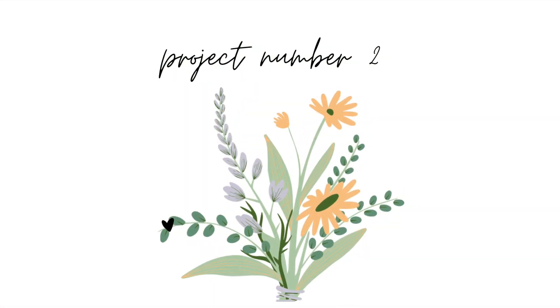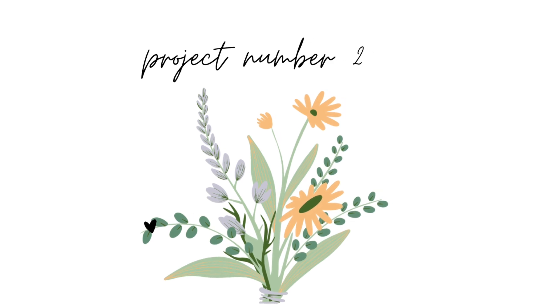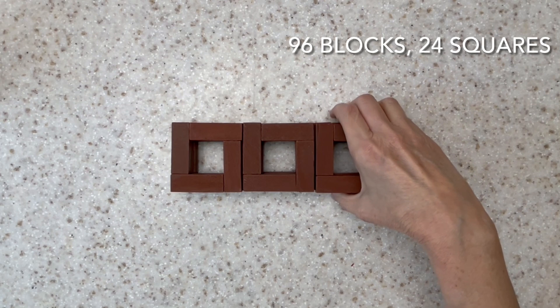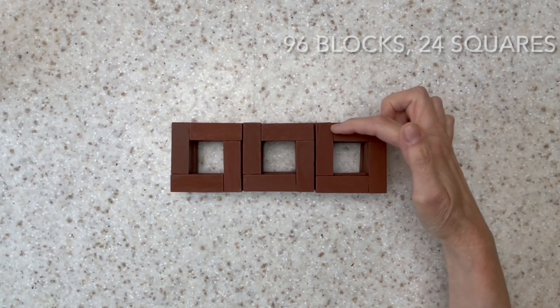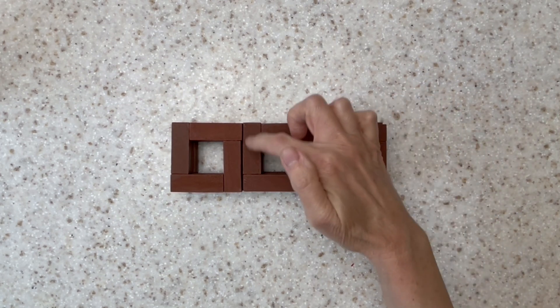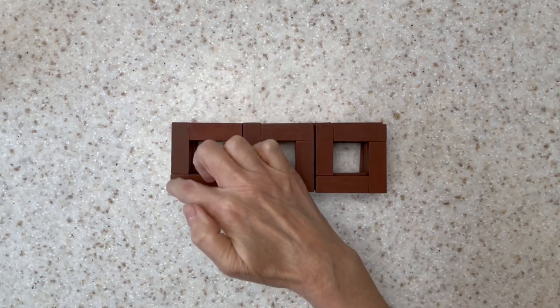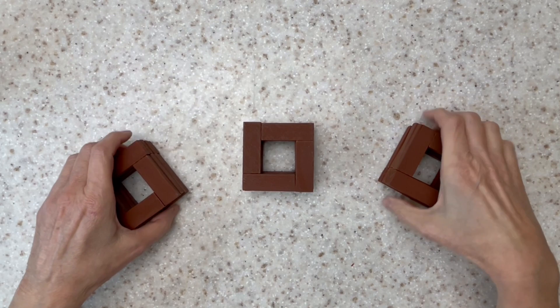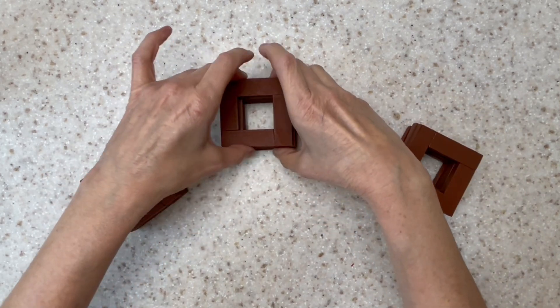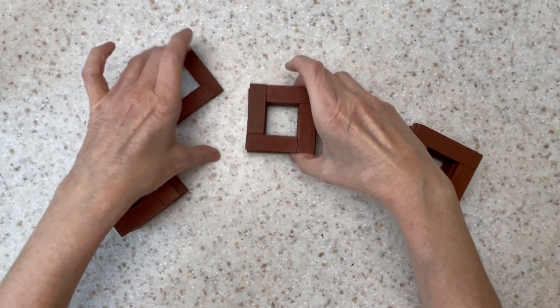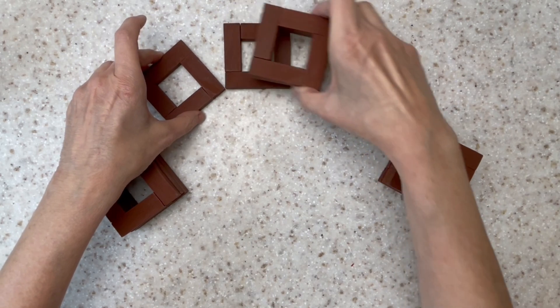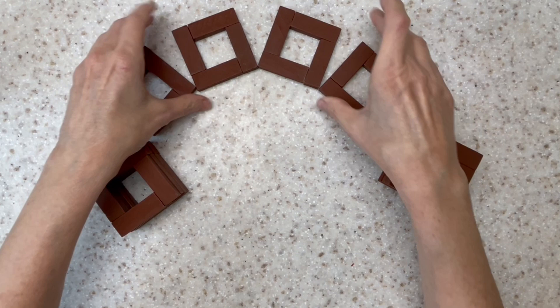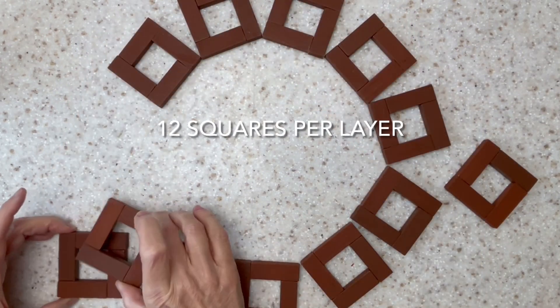Our next project is a wreath and we'll take 96 blocks. First, make 24 squares as we did earlier in the video. Make sure when you lay them out that they're all going in the same direction. Take 12 of the blocks and place them in a circle. If you put them all points to points, it should be pretty close to a perfect circle. Make it as round as you can.